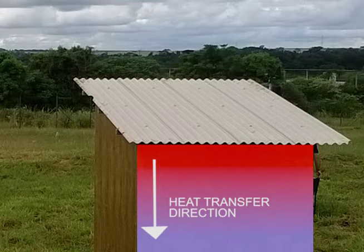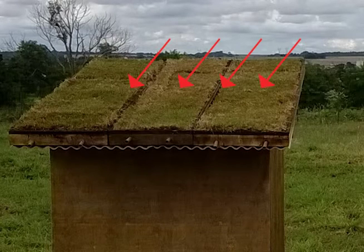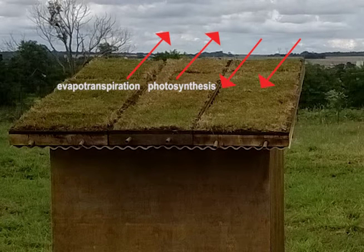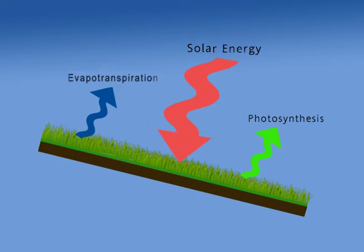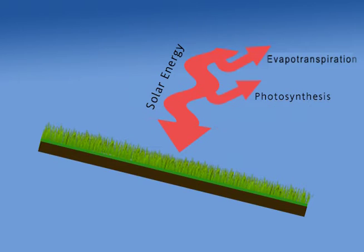When you put a green roof on a test cell, part of the energy from the sun is used for evapotranspiration and photosynthesis. Evapotranspiration is a process of releasing water vapor and heat — it's similar to when we sweat to regulate our body temperature. Plants transpire water vapor to regulate the temperature on their surface. Photosynthesis is a process of carbon dioxide assimilation into the plant. Both processes take energy away from warming the roof surface.